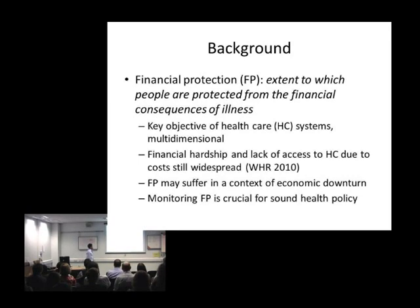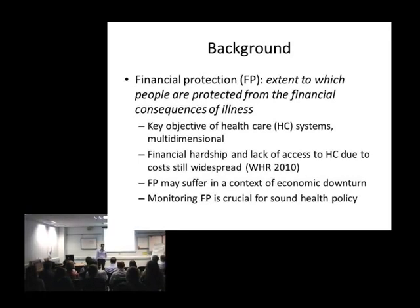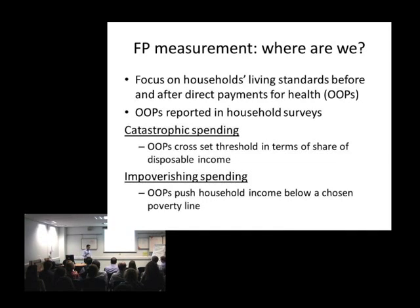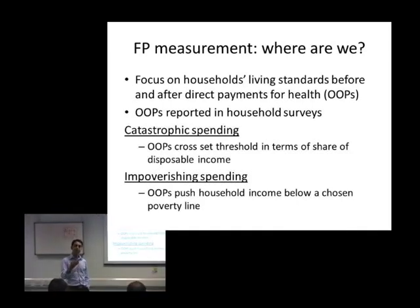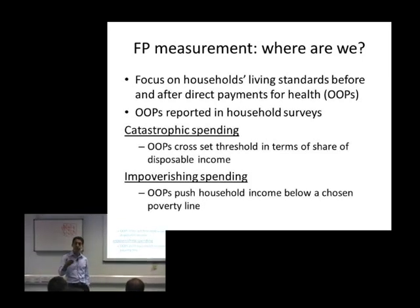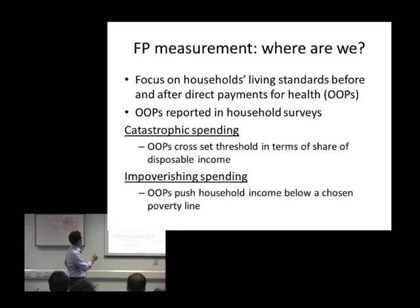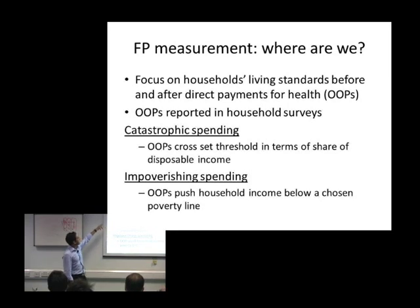Monitoring financial protection seems crucial for sound health policy, but the first problem that appears is how we can measure a concept that is multi-dimensional such as financial protection. The conventional metrics, even though it's a multi-dimensional concept, focus exclusively on the magnitude of direct payments for health — the household's direct payments for health — and compare those to some measure of the household living standard. Both the two main metrics, catastrophic spending incidence and impoverishing spending incidence, are based on out-of-pocket payments as reported in household surveys.